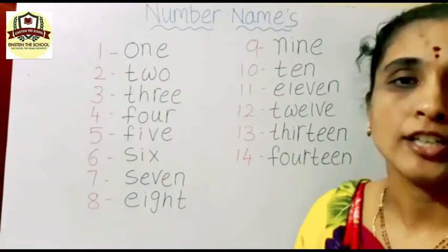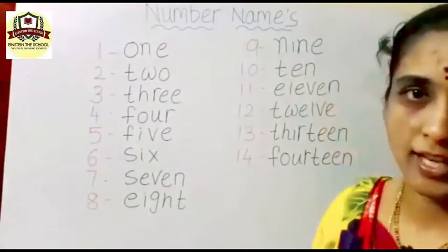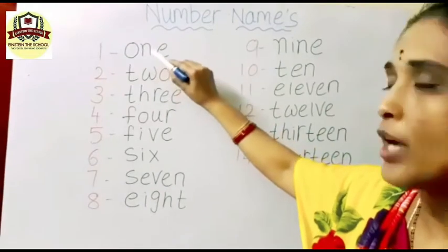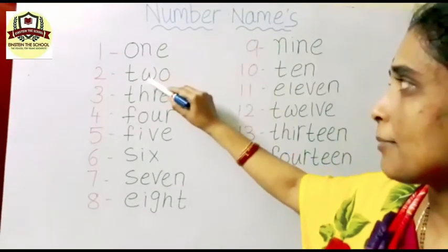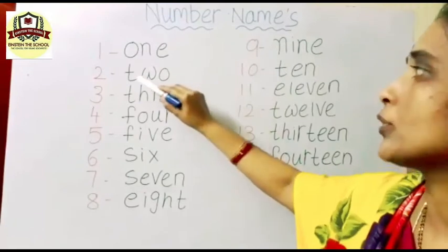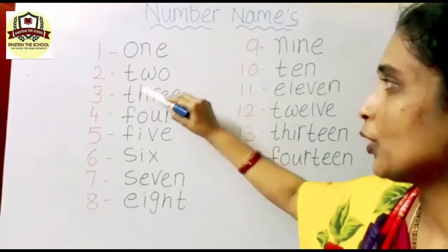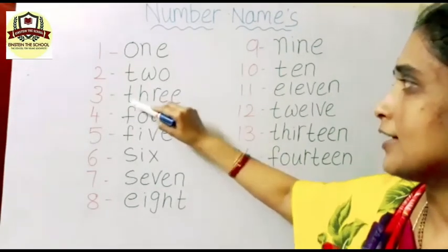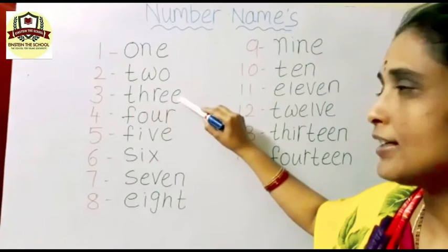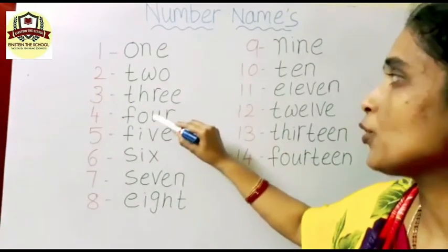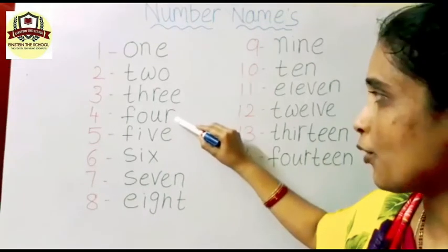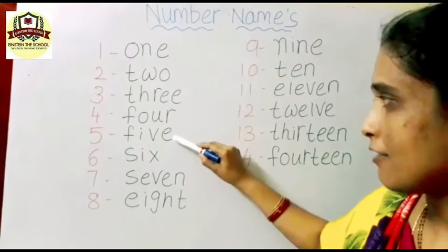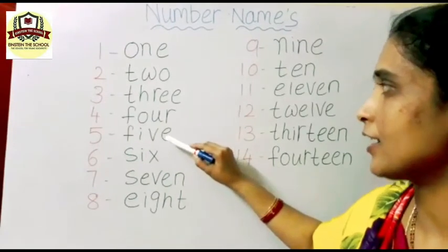Number names, okay start: O-N-E, 1, O-N-E, 1. T-W-O, 2, T-W-O, 2. T-H-R-E-E, 3, T-H-R-E-E, 3. F-O-U-R, 4, F-O-U-R, 4. F-I-V-E, 5, F-I-V-E, 5.